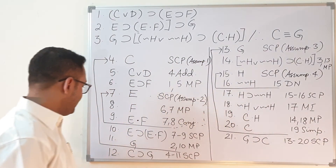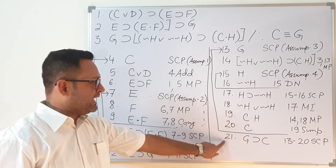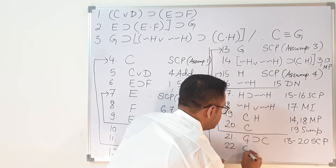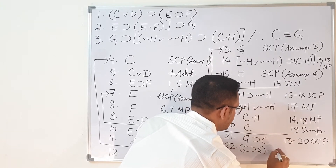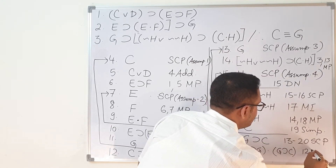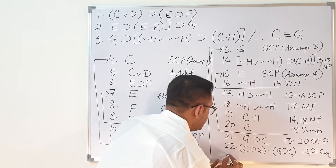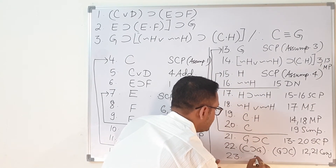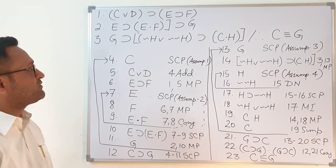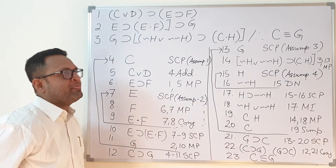Now I have C implies G on line 12 and G implies C on line 21. On line 22, I conjoin them: C implies G · G implies C, from lines 12 and 21 by conjunction. On line 23, C triple bar G comes out. The question is solved — even if it looked a little difficult at that one step, it is pretty solvable.